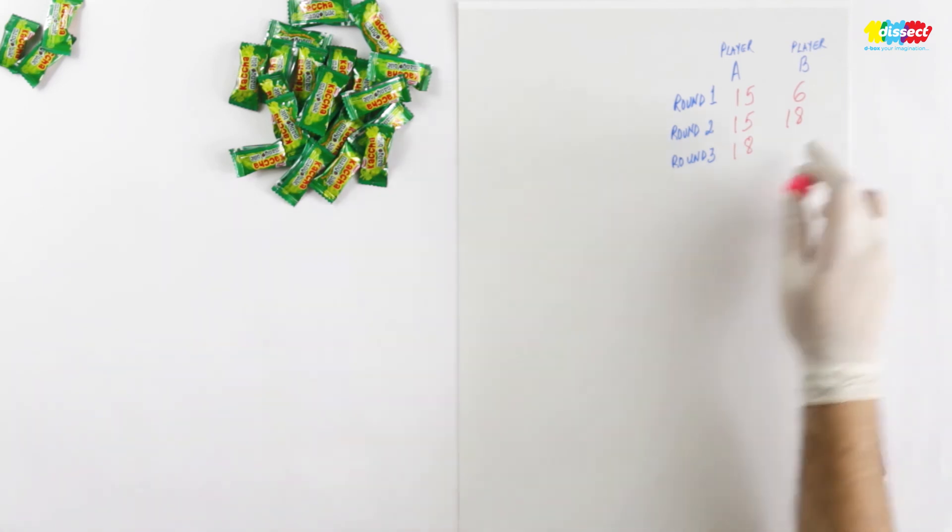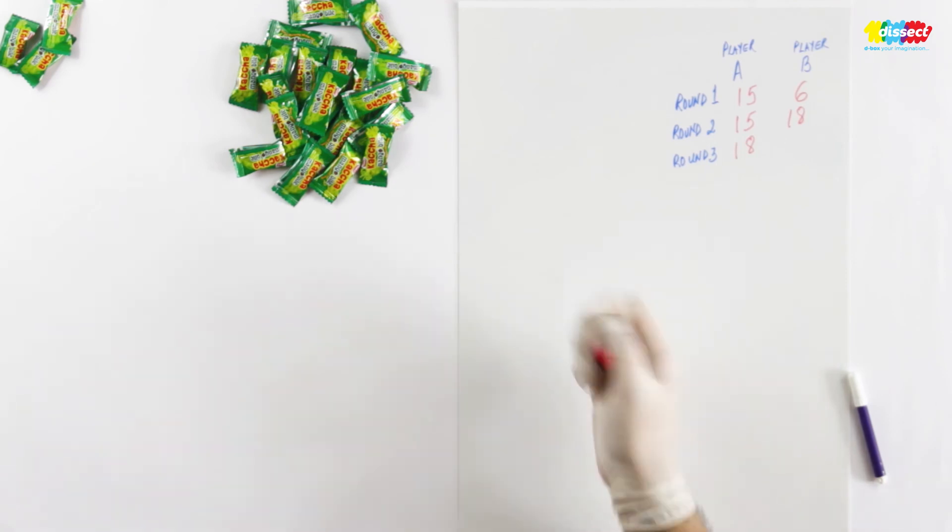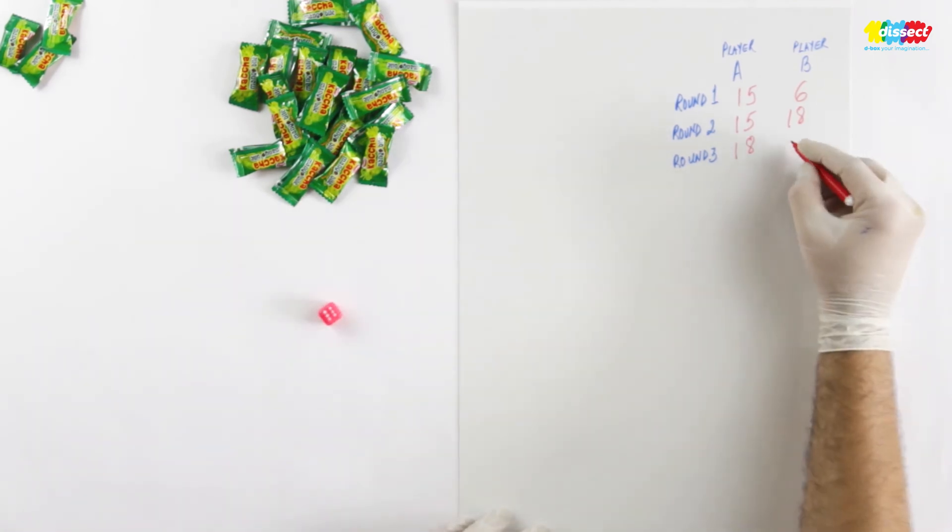And player B round 3, let's see what he gets. Six again. So 18.